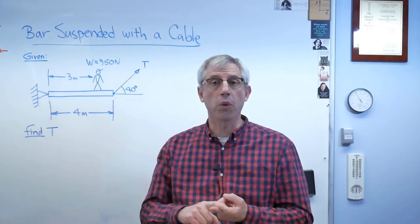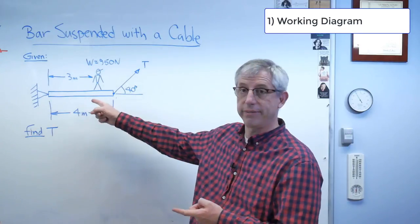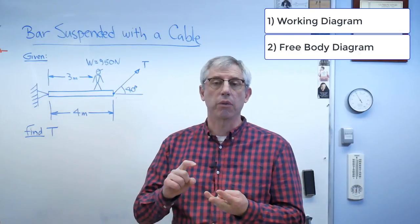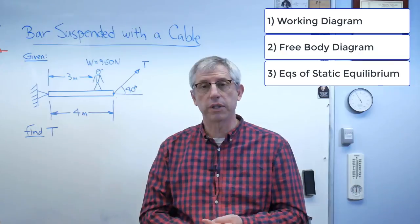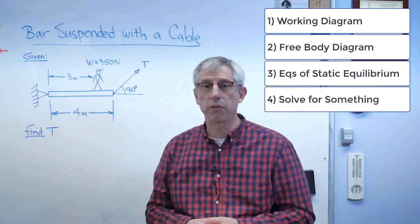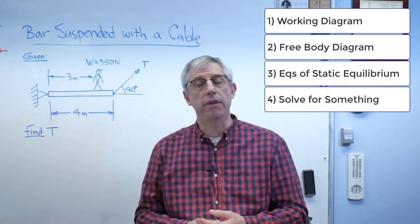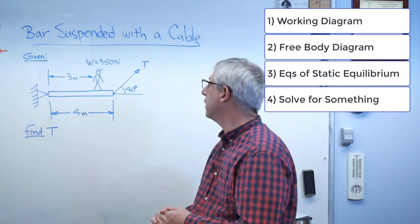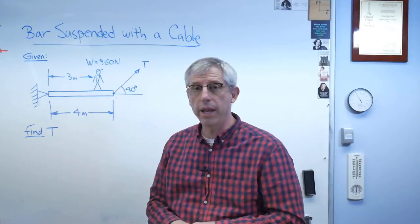The first is we're going to need a working diagram. That's this. Then we're going to draw a free body diagram. Then we're going to write out equations of static equilibrium. And then we're going to solve for something. And that something we're going to solve for is the tension. And the fifth step, of course, is optional. We're going to enjoy baked goods afterwards in celebration.